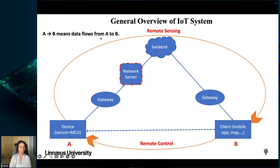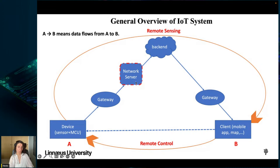This is a general overview of an IoT system. Data flows from A to B — A is the device (sensor plus MCU) and B is the client. From A to B is remote sensing, and the data passes through a gateway, optionally a network server, and then to the backend or cloud. It then comes back through a gateway close to the client. Whether we need a network server depends on whether we use Wi-Fi or LoRaWAN.